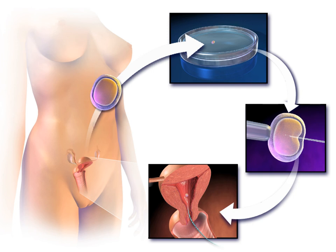ART mainly belongs to the field of reproductive endocrinology and infertility. Some forms of ART are also used with regard to fertile couples for genetic reasons. ART may also be used in surrogacy arrangements, although not all surrogacy arrangements involve ART.